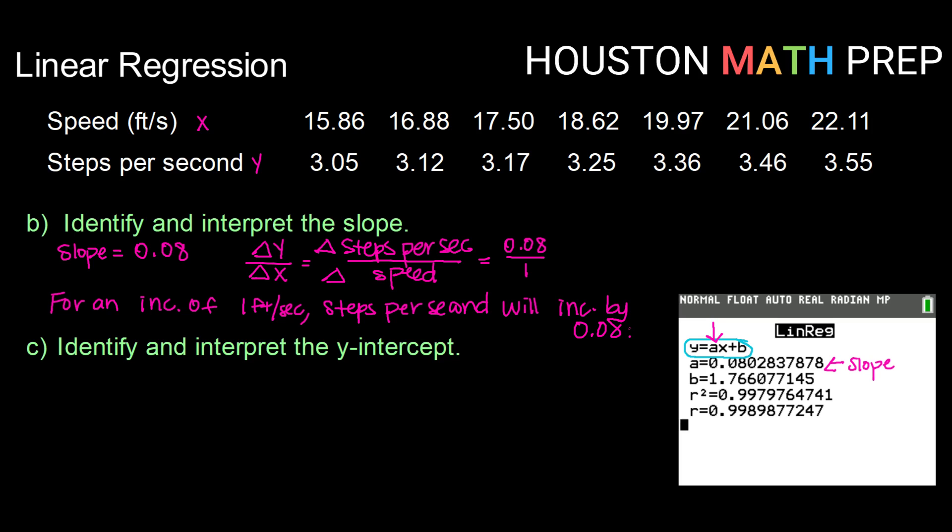Okay, next question. Identify and interpret the y-intercept. So looking back at our readout, y-intercept is going to be our b variable. So if we think about, again, thinking back to algebra, if we have mx plus b, that b value is your y-intercept. So in this particular instance, y-intercept is 1.766 or so on. So I'm going to jot that down over here. My y-intercept is the point 0 comma 1 point... I'm just going to go ahead and say 1.77, just rounding that.